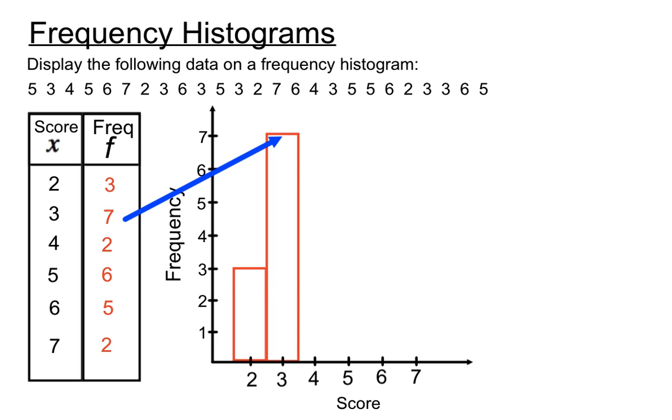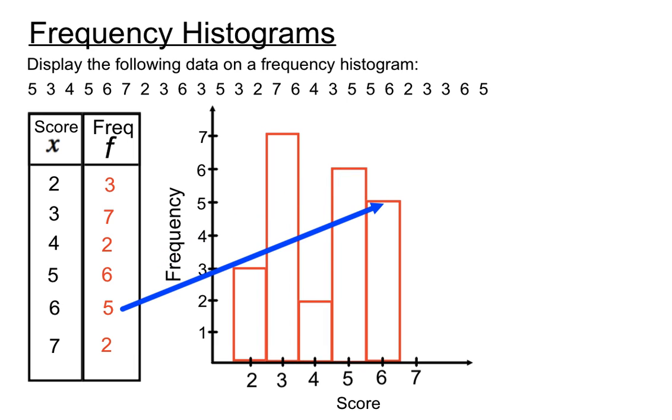The score of 4 occurs twice so it's got a column that goes up to the 2 on the frequency. The score of 5 occurs 6 times and the score of 6 occurs 5 times. You notice in each case here we're putting the columns right up against the column beside it before it.